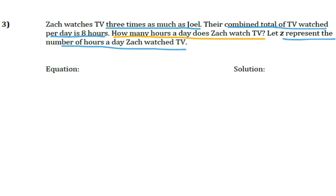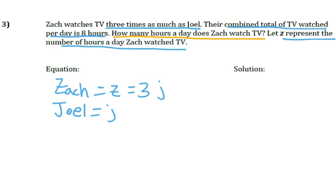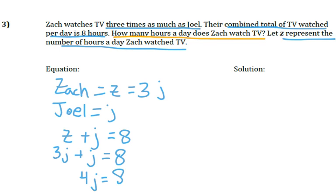Before we write our equation, let's write down what we know. The hours Zach watched TV is represented by Z, and Zach watches three times as much as Joel. So if Joel's amount is J, that means Z — what Zach watches — is three times J. Their combined TV watching time is eight hours, so we could write Z plus J equals eight. But that's not helpful for one variable, so we replace Z with 3J: three J plus J equals eight. If we combine like terms, we get four J equals eight — and that's the equation I would write down.